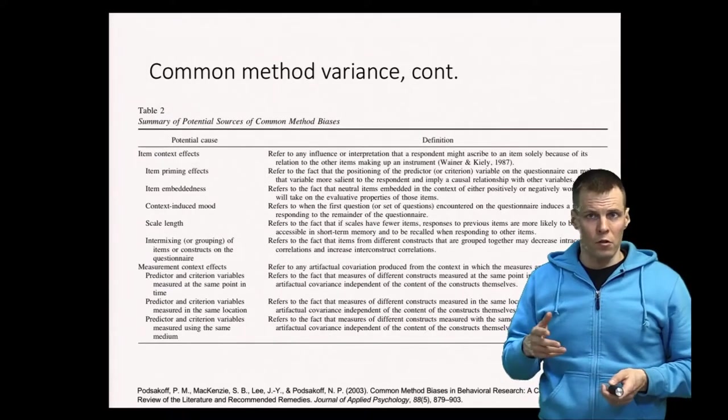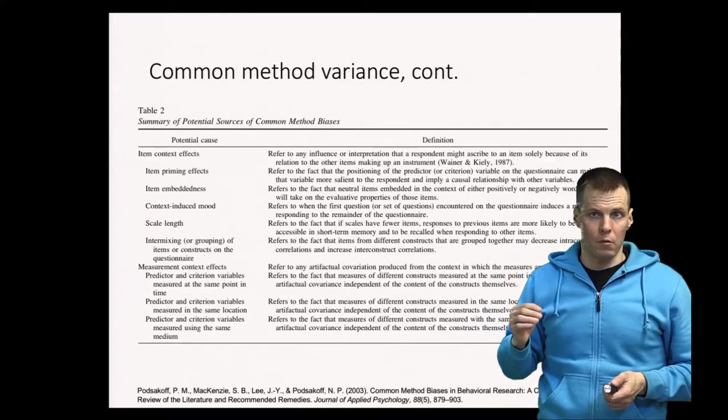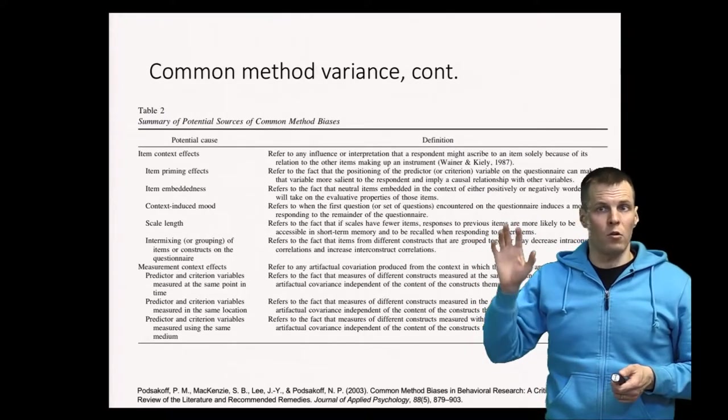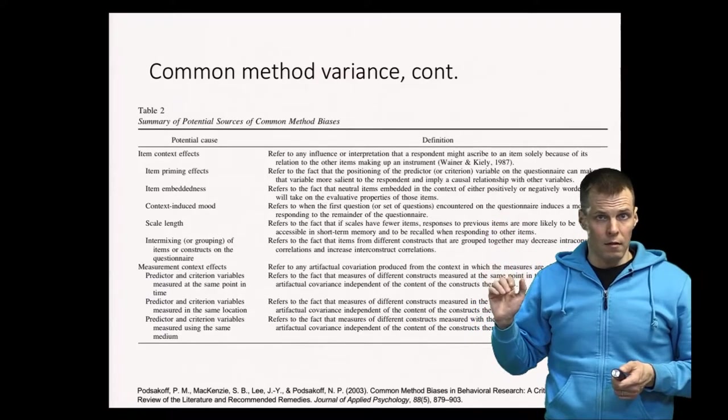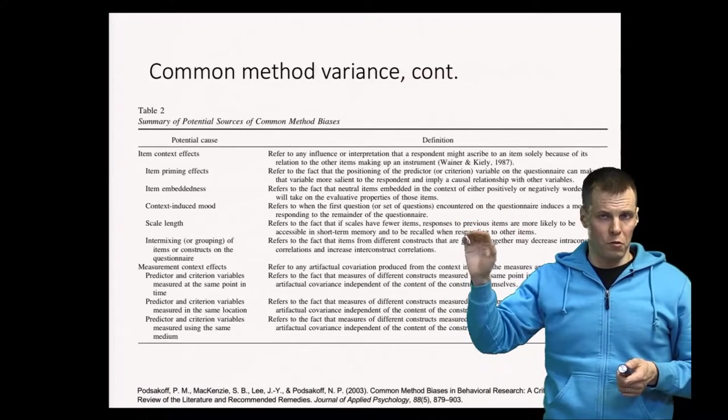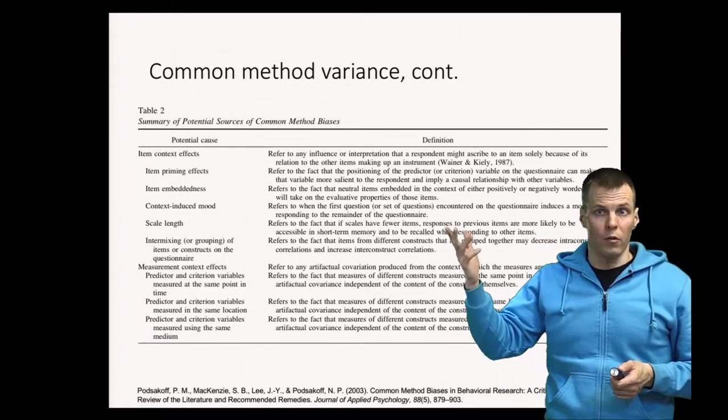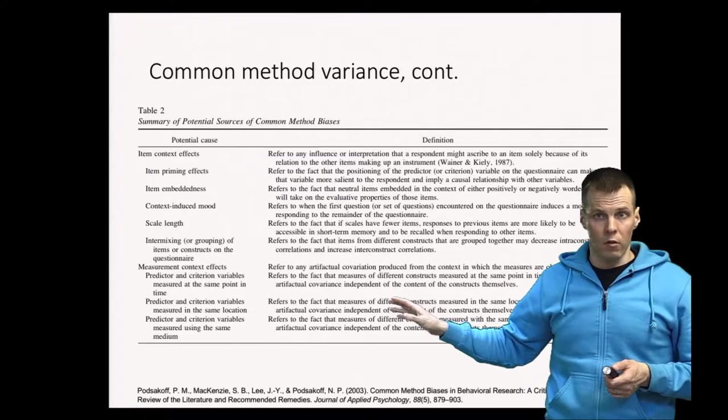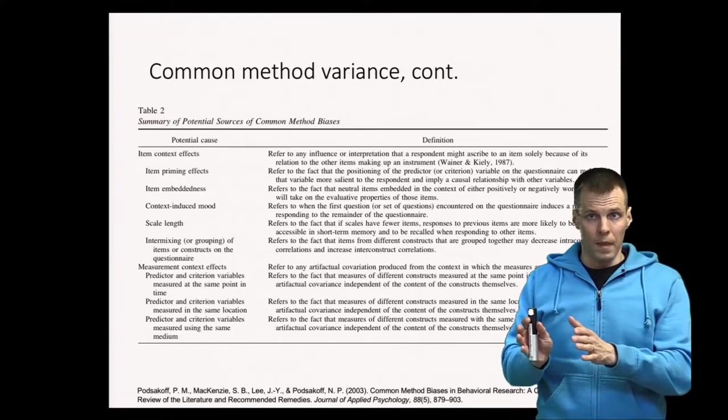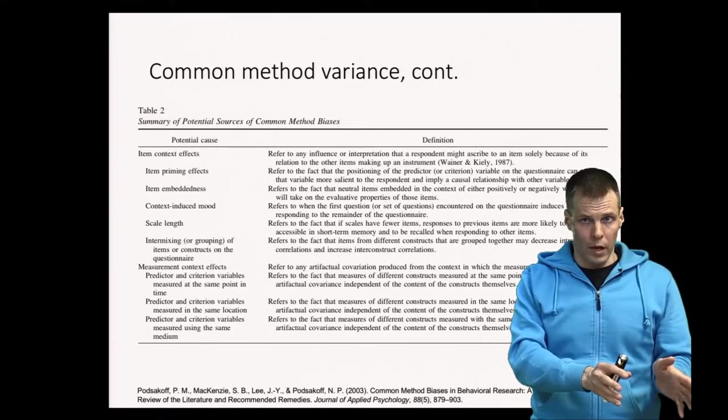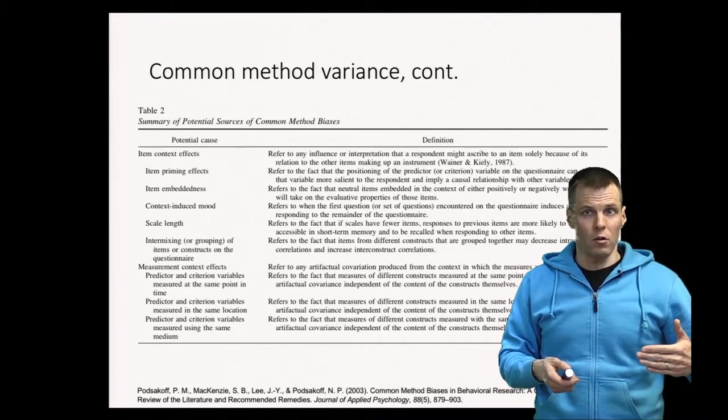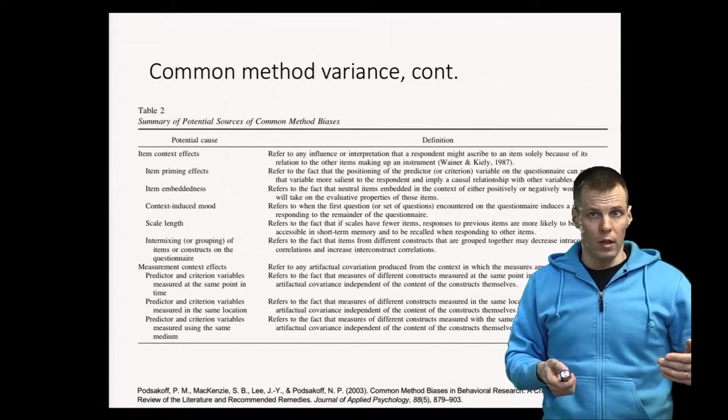Then there are also item context effects. If you ask a question first that makes people angry, then that will influence all subsequent indicator responses. Or if you have a question of whether the company is innovative or not, and then you have indicators after that that measure specific aspects or specific consequences of innovativeness, then the general question will prime the person to answer positively or negatively to the remaining questions, depending on how they answer the first question. And then there's measurement context effects, like some people want to answer in a specific way when using paper and pen. Some people answer in a specific way in online forums, and that can cause variance. So there are many different ways why your survey indicators can become correlated that is not due to the theoretical constructs.